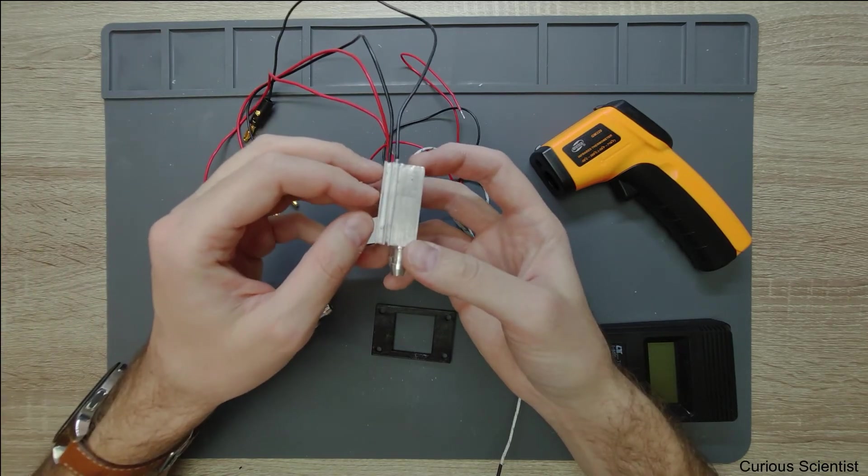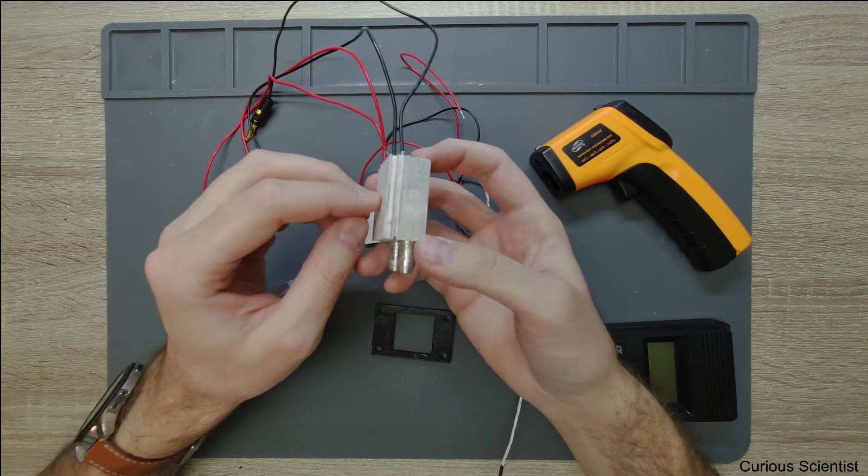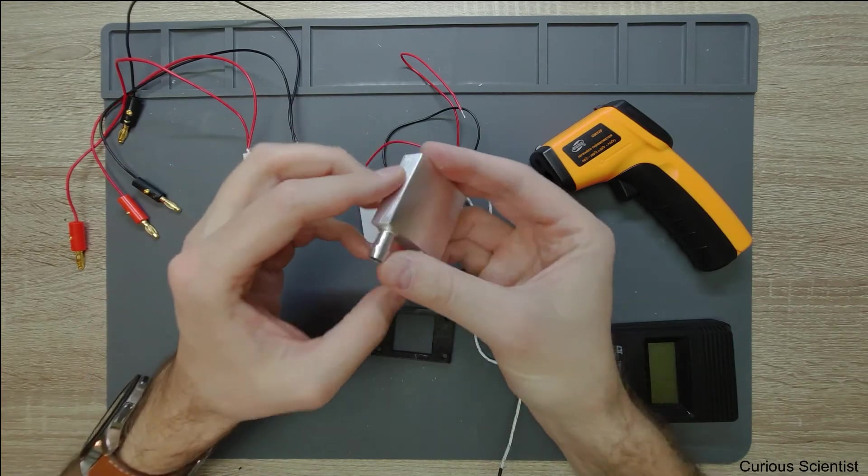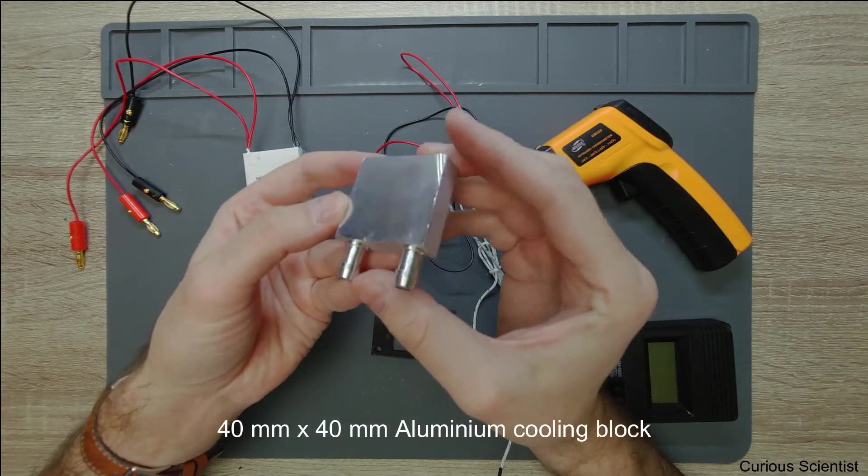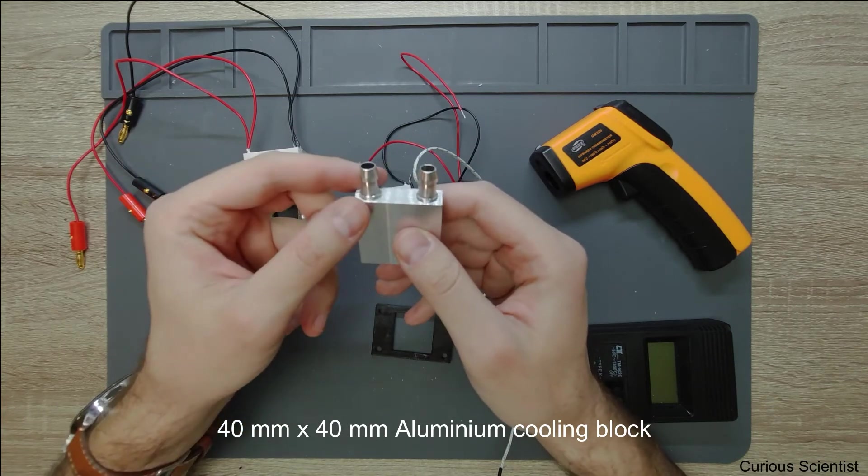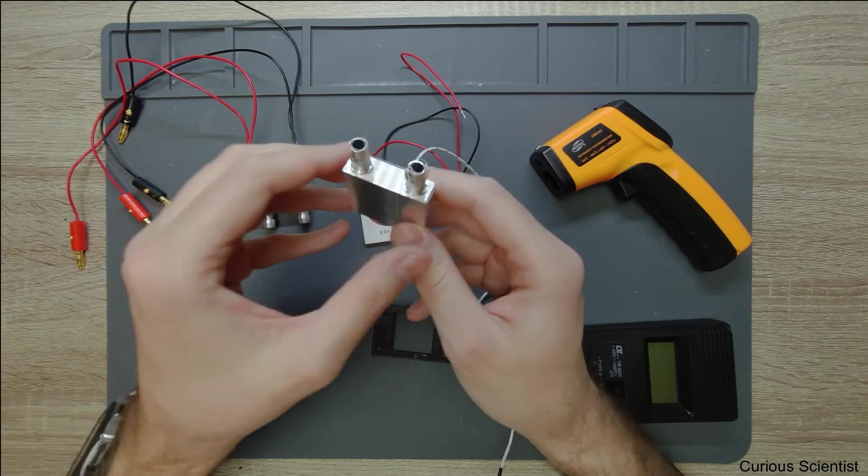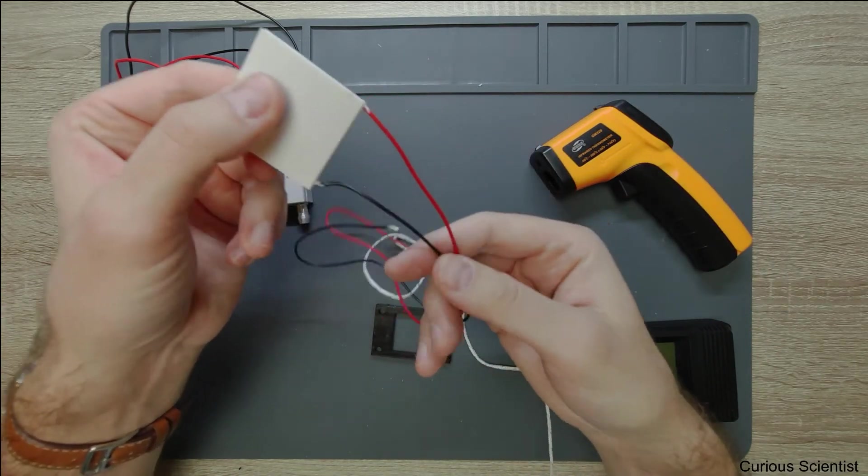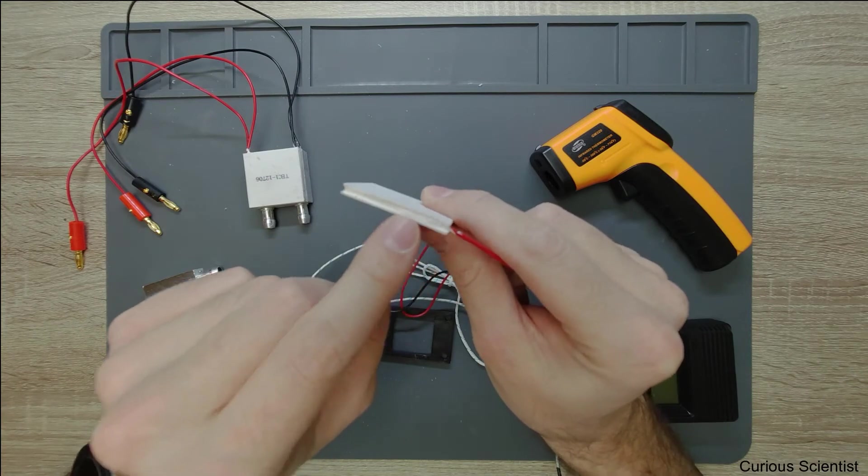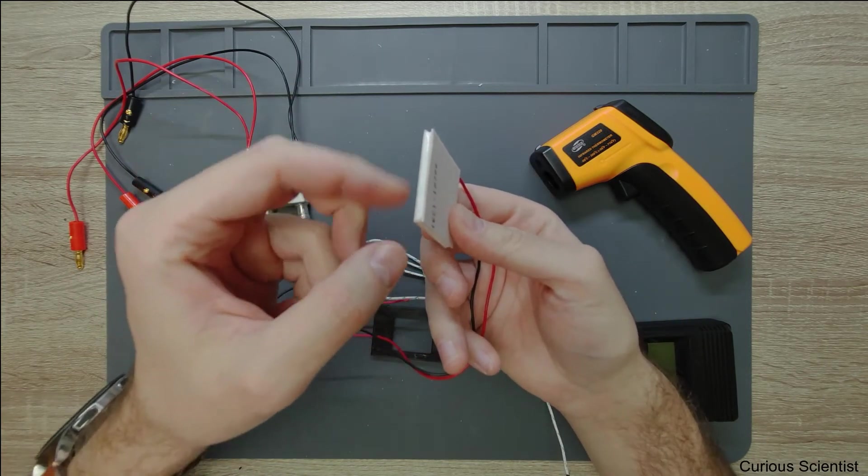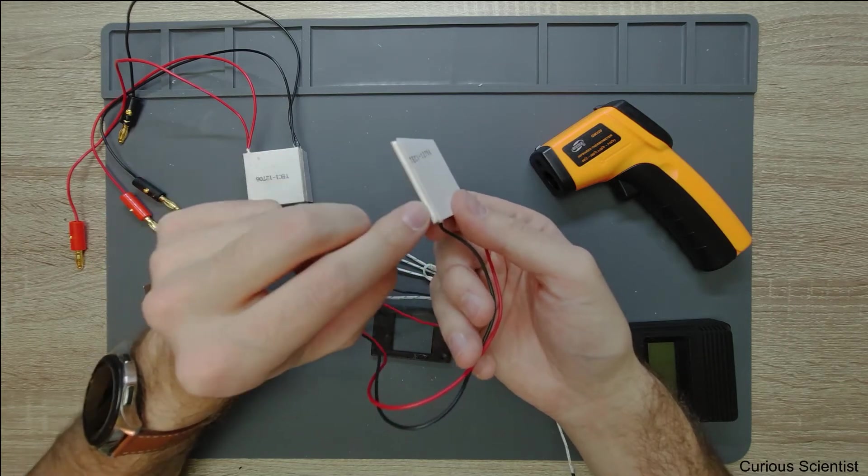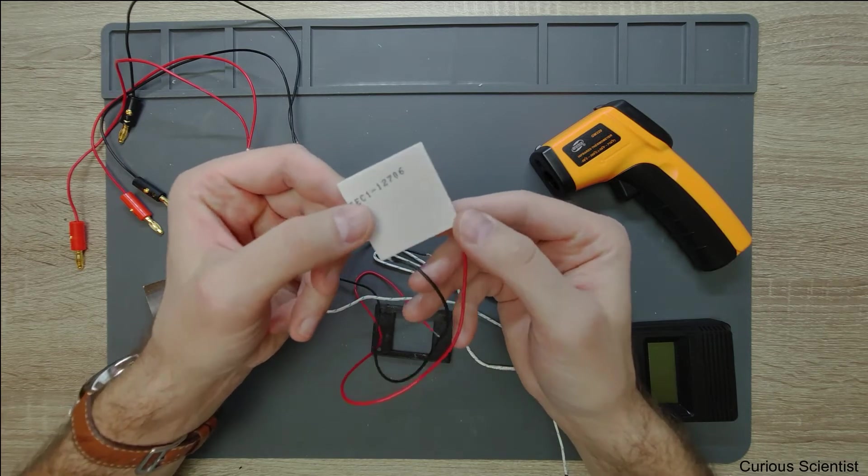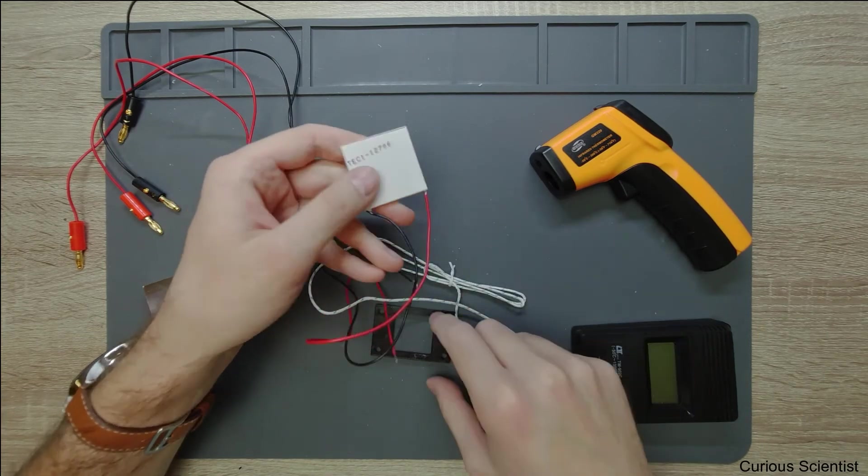I glued them together with thermal grease. This is on the bottom, a simple aluminum block with two connections to the water cooling from my previous projects. They are sealed with silicone so the water and humidity won't damage them.